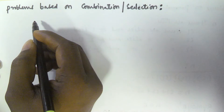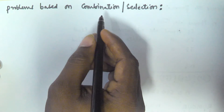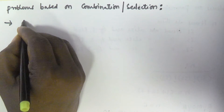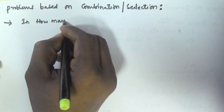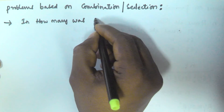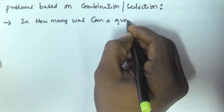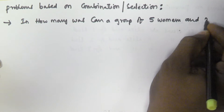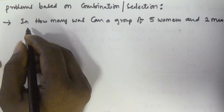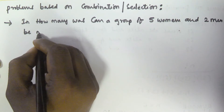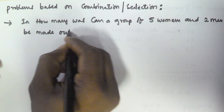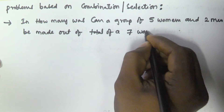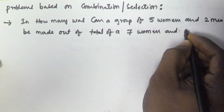Hello friends. In this video we will see some problems based on combinations or selections. In how many ways can a group of 5 women and 2 men be made out of a total of 7 women and 3 men?